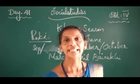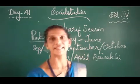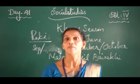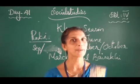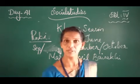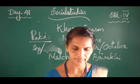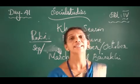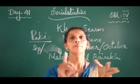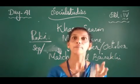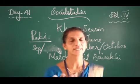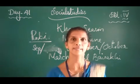Next is Rabi season — R-A-B-I. Rabi season begins with the starting of the North East monsoon in September or October, and continues through November, December, January, February, and March.